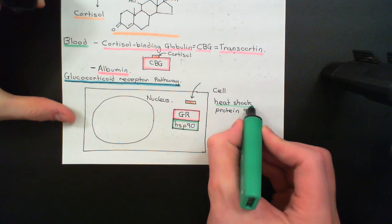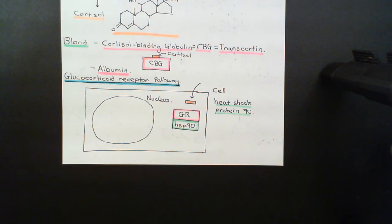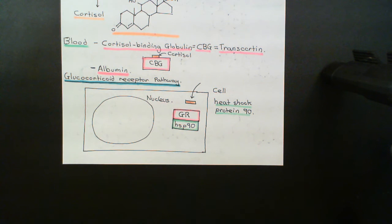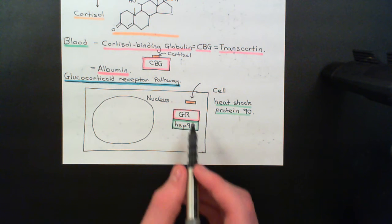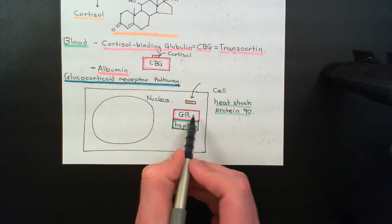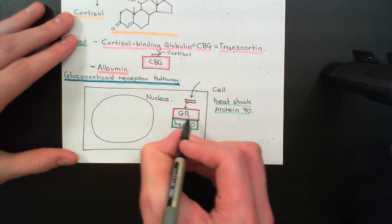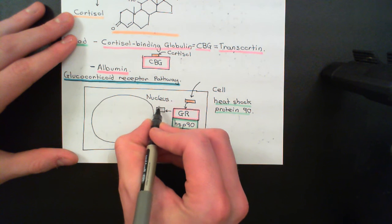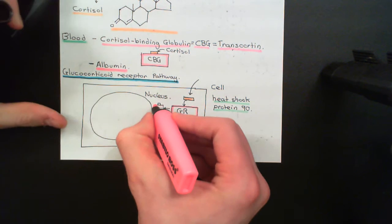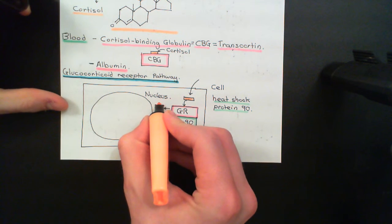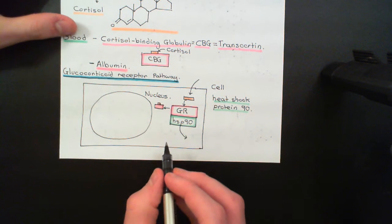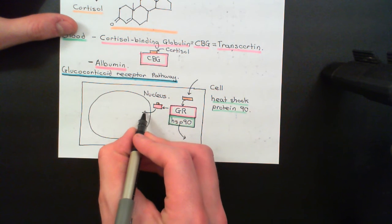HSP90 is normally binding to glucocorticoid receptors and keeping them in the cytoplasm. When the glucocorticoid receptor is dimerised with HSP90, it cannot go into the nucleus and it's not doing anything. When cortisol arrives, it binds to the glucocorticoid receptor and causes the heat shock protein 90 to cleave away. So you form a complex of cortisol with its glucocorticoid receptor — no longer bound to HSP90 — and now the glucocorticoid receptor can get into the nucleus.